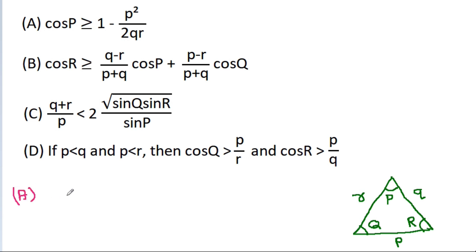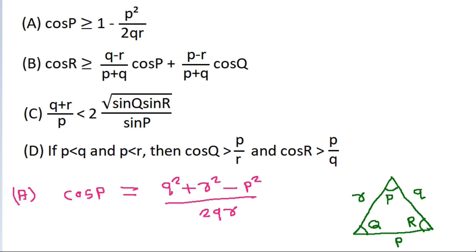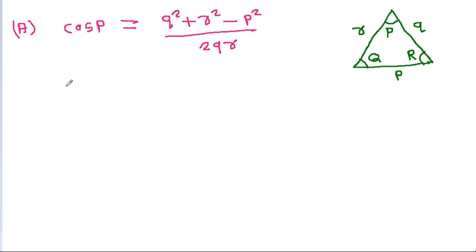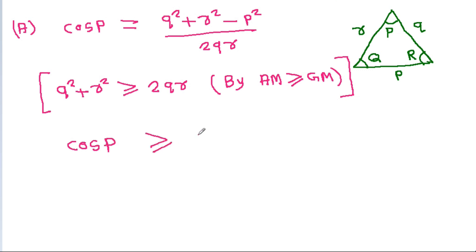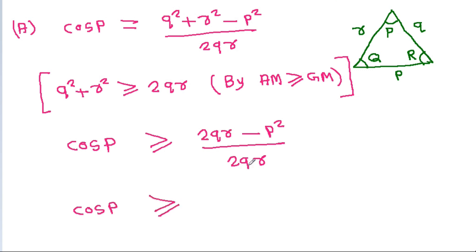For option A, cos P will be equal to (q² + r² − p²) / 2qr by the cosine rule. So, cos P will be greater than or equal to 2qr / 2qr by AM ≥ GM. So, cos P will be greater than or equal to (2qr − p²) / 2qr, which simplifies to 1 − p² / 2qr.